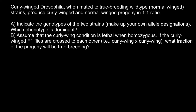The first question is straightforward. We can get a one-to-one ratio when we cross two genotypes where one is heterozygous and the other is homozygous recessive. Now we have to decide which genotype would be wild type and which would be the one that produces curly wings.